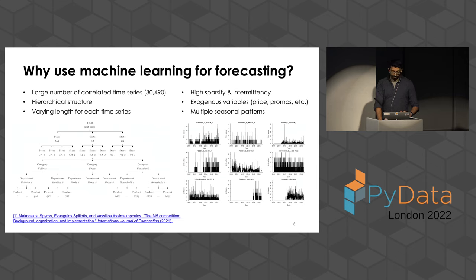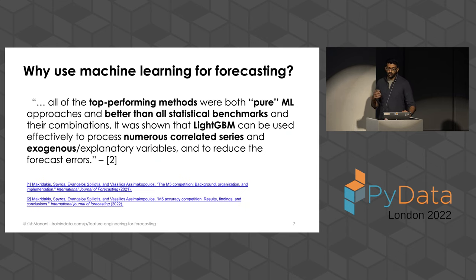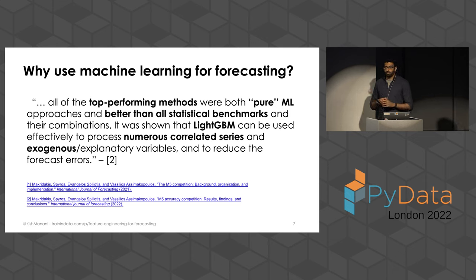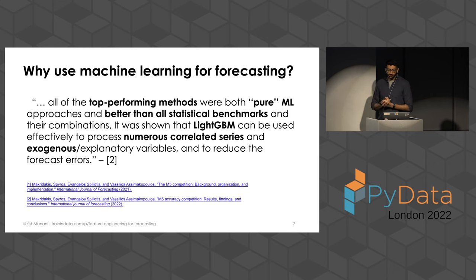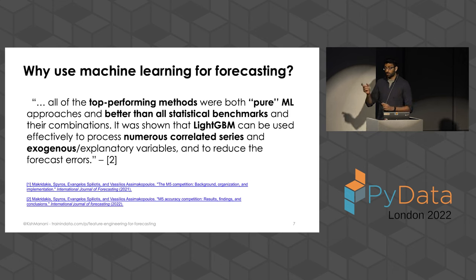For a problem like this, all of the top-performing methods in the competition were pure machine learning methods, and LightGBM was used in a lot of the top solutions. It was better than all of the standard statistical benchmarks traditionally used in time series forecasting, like ARIMA or exponential smoothing. A machine learning approach is able to learn across a large number of related time series and also take into account exogenous variables. You can also get neat side effects — for example, access to sample weights, which you can use to give more weight to recent data, and you can use custom loss functions, which was actually used in the winning solution.